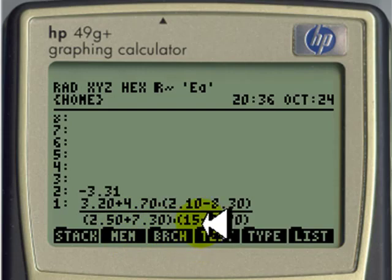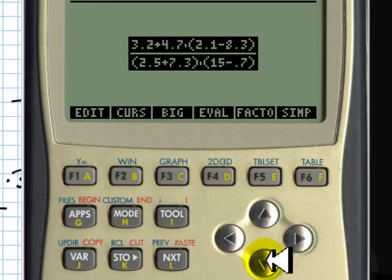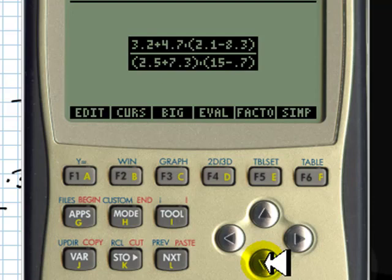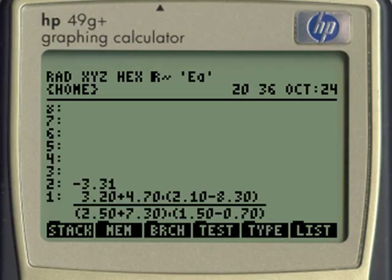Check it out. I made a mistake here. Instead of 1.5, I wrote 15. How do I change it? I edit that this way. I click the down arrow, and I keep clicking the down arrow until the cursor becomes transparent. At that point, I'm ready to change anything. I move forward with the right arrow until I reach the offending value. 15. No. 1.5. And after that, I type enter again. And now we have the right expression.